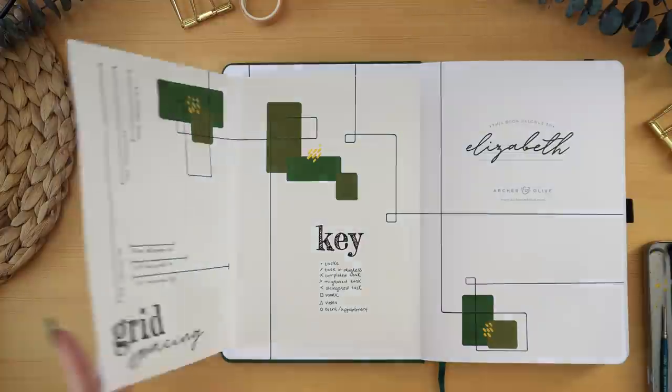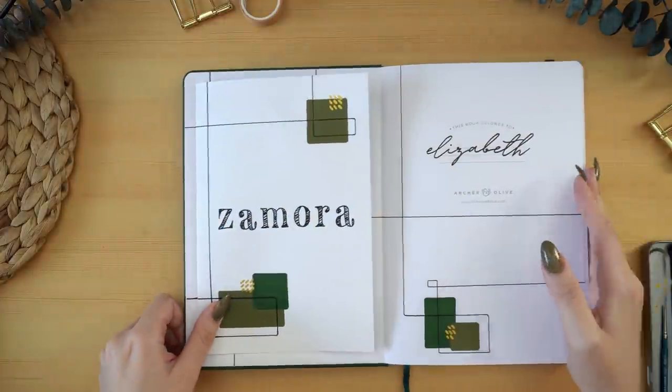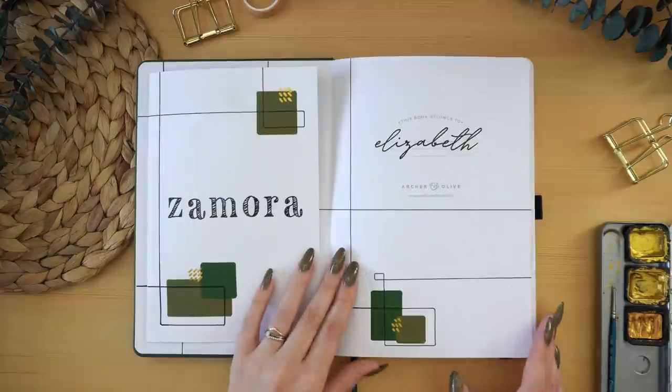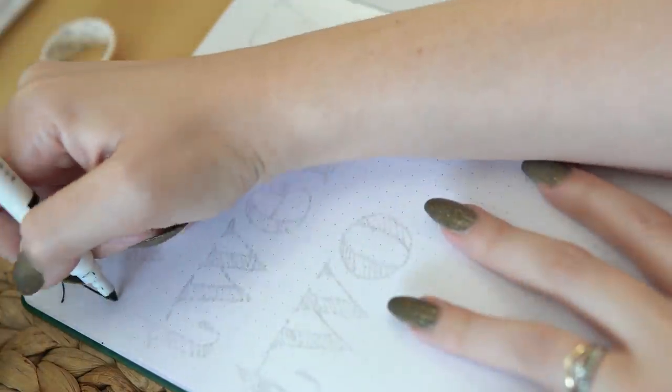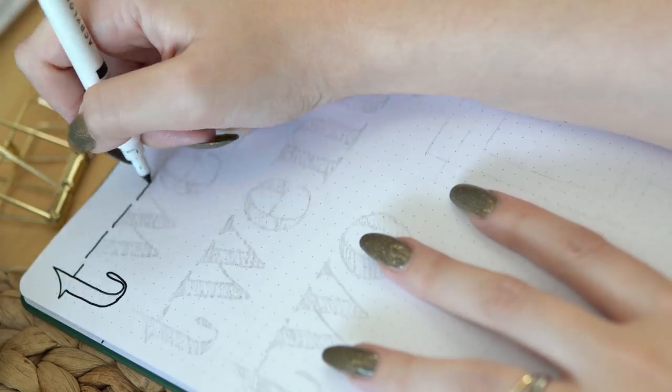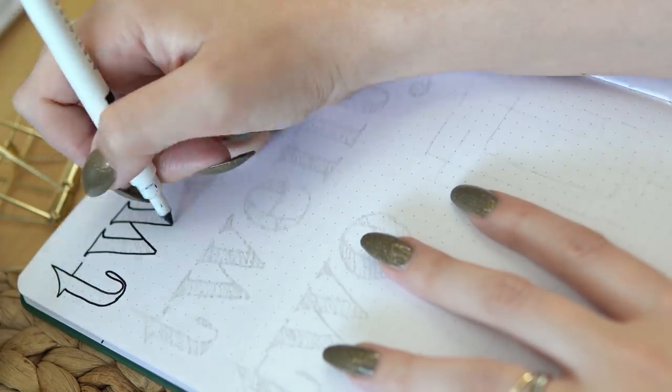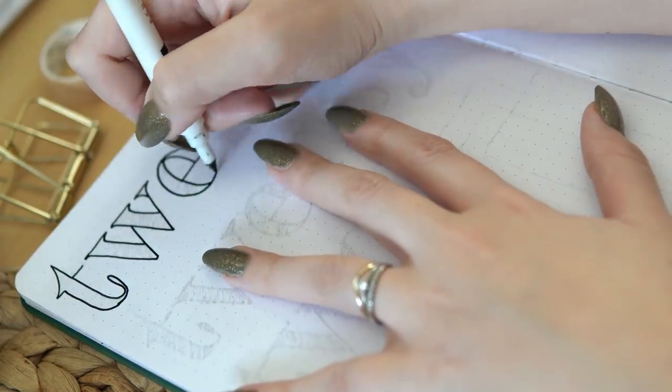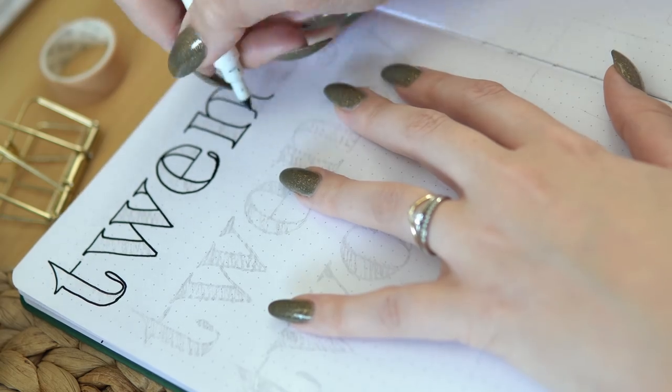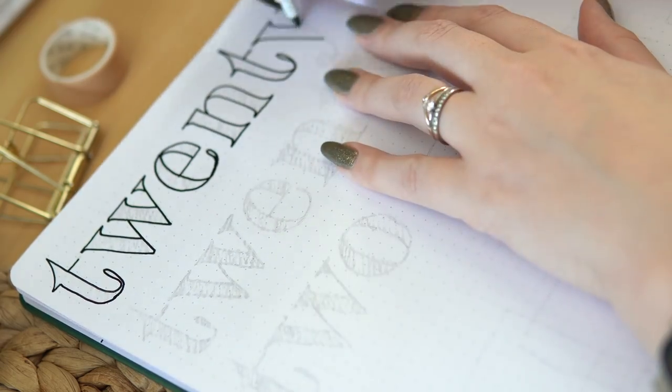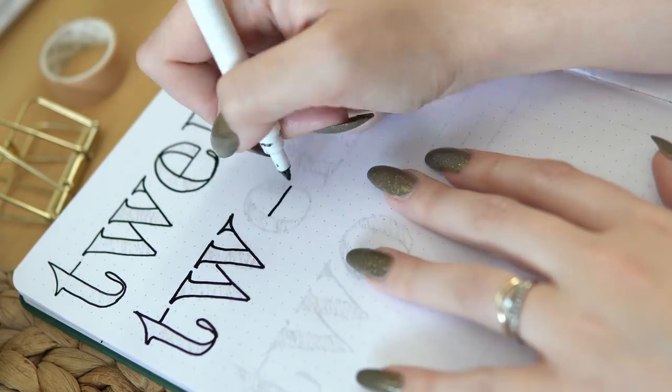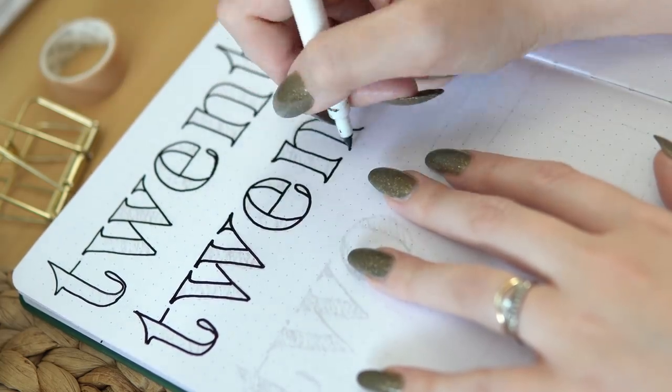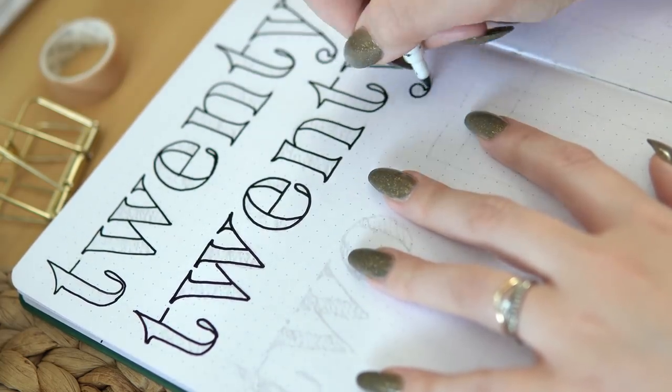Now that those initial few spreads are done, I'm going to flip to my next spread, which is the cover page of this setup—the 2022 header on the left side and then a quote for this bullet journal on the right. The quote I chose was 'the best is yet to come.'